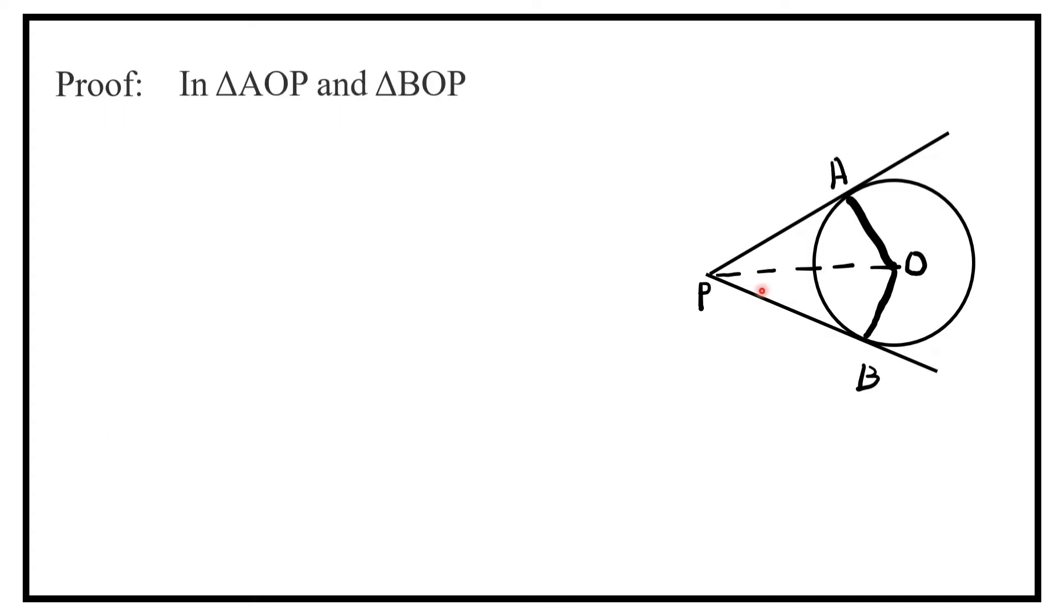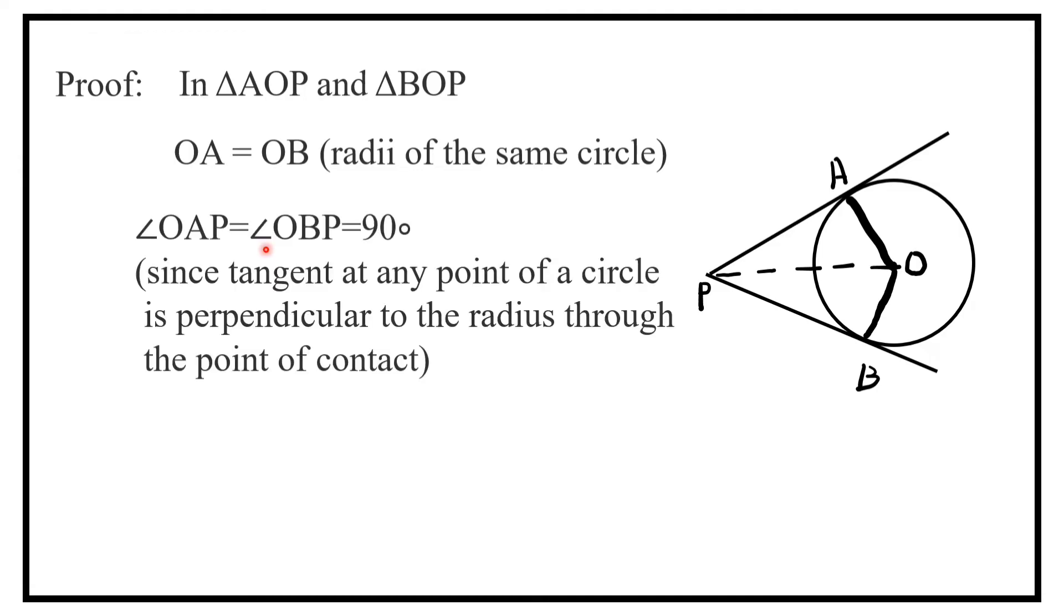Proof: In triangle AOP and triangle BOP, OA is equal to OB by radii of the same circle. Angle OAP is equal to angle OBP equals 90 degrees, because the tangent at any point of a circle is perpendicular to the radius through the point of contact.